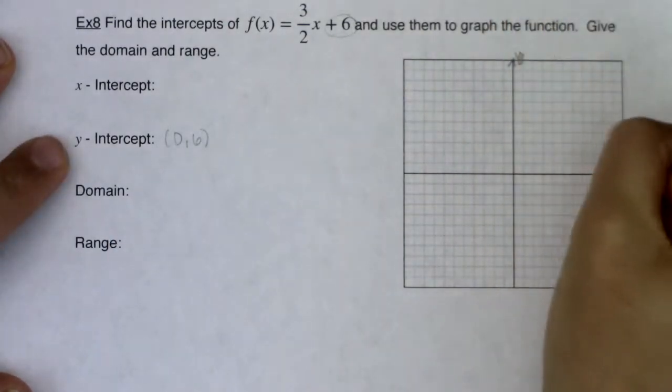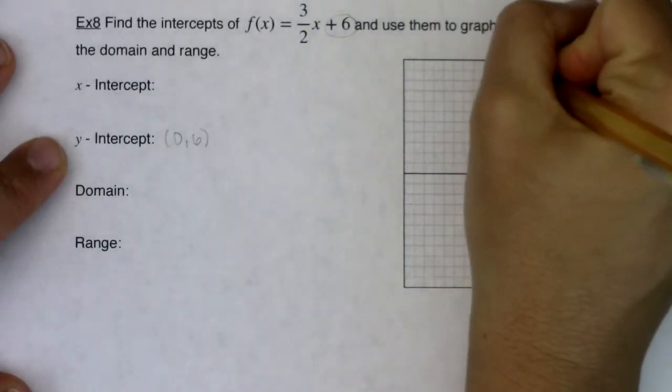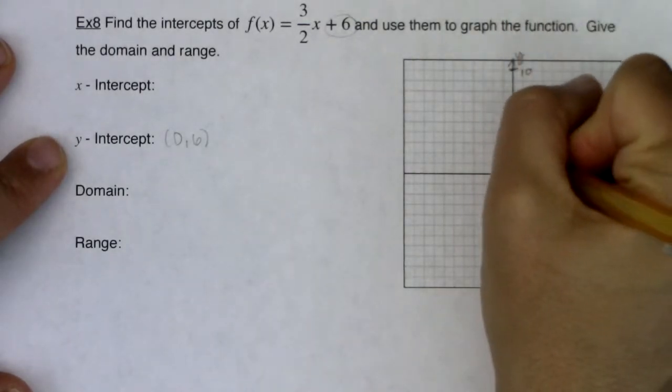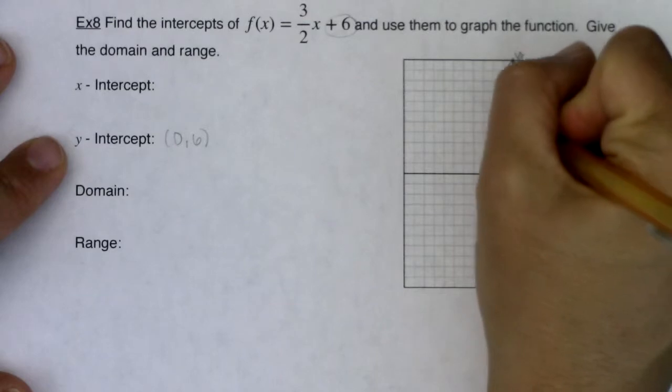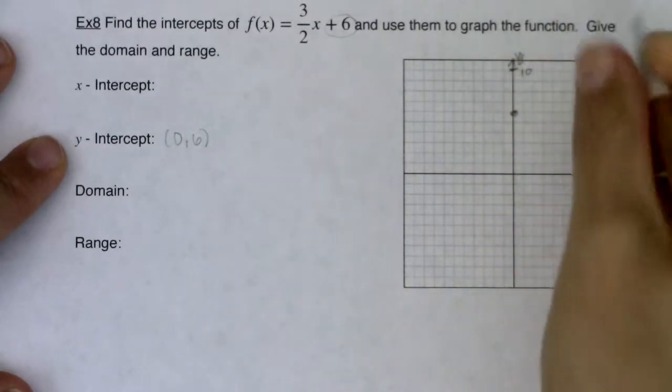So let me go put that point on my graph. I'm going to label and scale these axes and I'm going to go to (0, 6). So one, two, three, four, five, six.